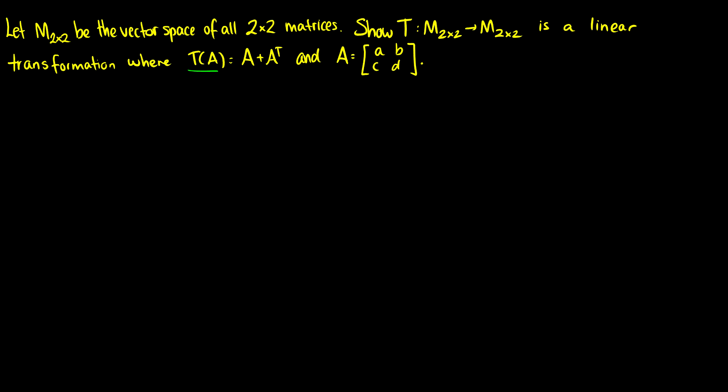I want to show this is a linear transformation. So there's two requirements. The first requirement is that if I have T and then I take A plus B, this is going to be the same thing as the transformation on A plus the transformation of B. And then the second part is if I take a transformation A and multiply it by a scalar, so I have T of cA, this is just equal to the scalar times the transformation on A.